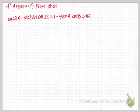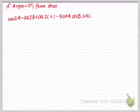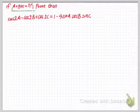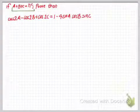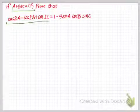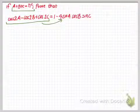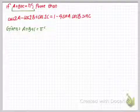Hello and welcome back. In this tutorial we'll be looking at another question based on conditional trigonometric identities. We are given the condition that the sum of three angles A, B, and C is equal to pi radian. Using this condition we have to take the left hand side of the equation and try to solve for the right hand side. So here is our given condition: A plus B plus C equals pi radian.